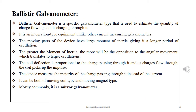A ballistic galvanometer is a specific galvanometer type used to estimate the quantity of charge flowing and discharging through it. It is an integral type of equipment unlike other current-measuring galvanometers. The moving parts have a large moment of inertia giving a longer period of oscillation — the greater the moment of inertia, the more opposition to angular movement, translating to larger oscillations. The coil deflection is proportional to the charge passing through it as the charge flows through the coil. The device measures the majority of charge passing through it instead of current, and it can be of moving coil type or moving magnet type.